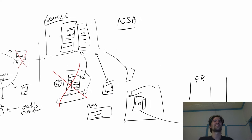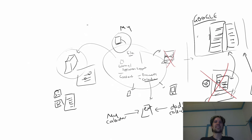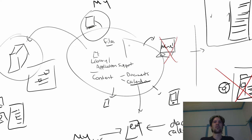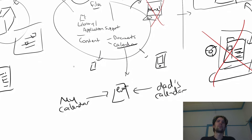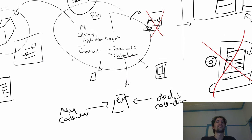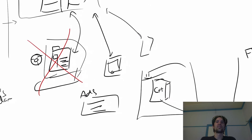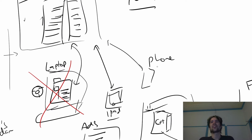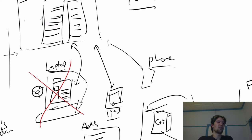It's something that absolutely does not sit right with this model of my data sitting in Google's servers with Google having complete control over it. I want to have some way to get the functionality and features of the model where I own my data — with simple applications on my computer talking to files directly — while still having all the benefits of the cloud model, without some giant shadowy corporate overlord looking at my data.